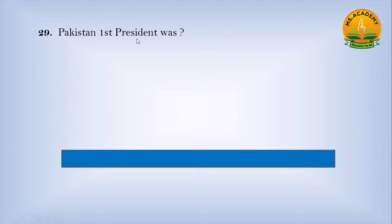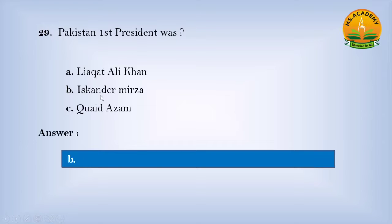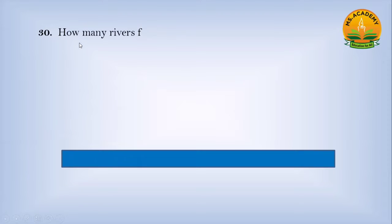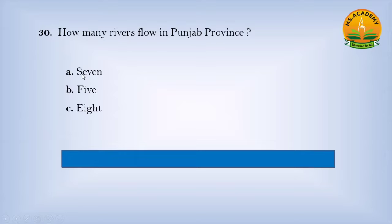Pakistan's first president: option A Liaquat Ali Khan, option B Iskander Mirza, option C Quaid-e-Azam — answer is B, Iskander Mirza. How many rivers flow in Punjab province? Option A seven, option B five, option C eight — answer is B, five.